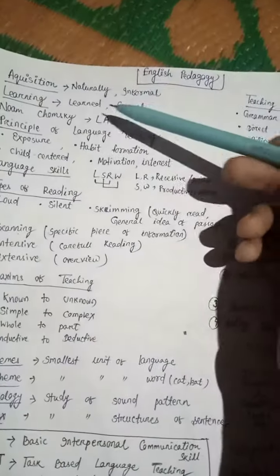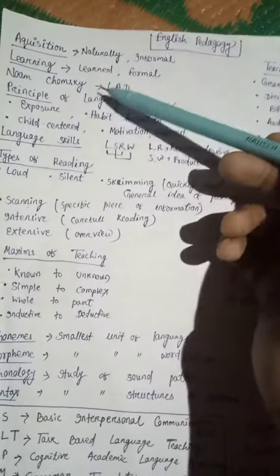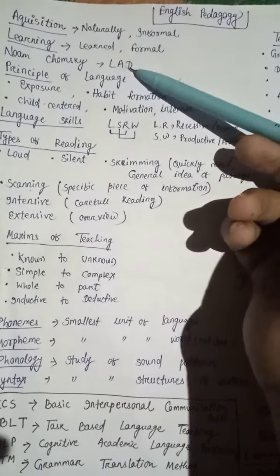English Pedagogy in One Minute. Acquisition, which is naturally and informal. Learning is learned and formal. Noam Chomsky, LAD, Language Acquisition Device.